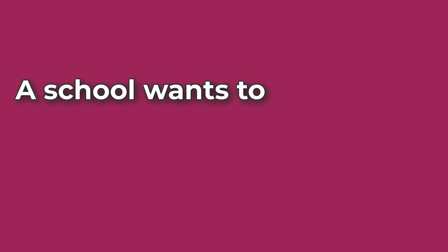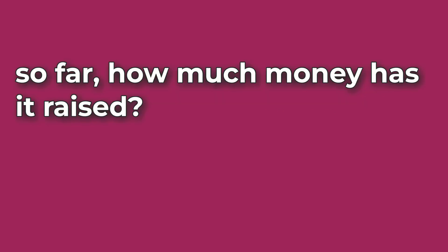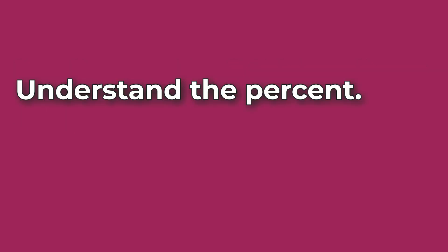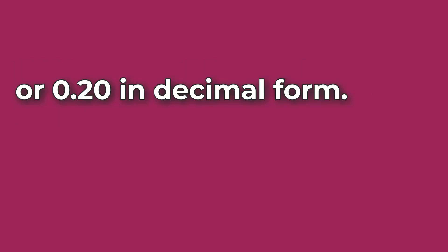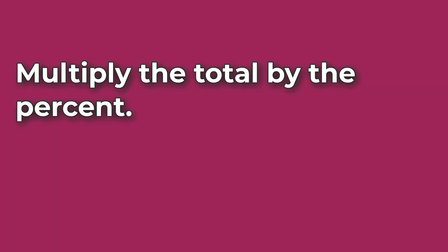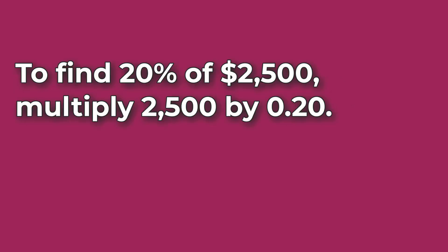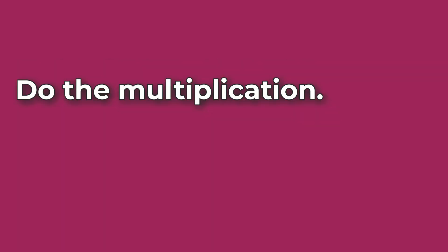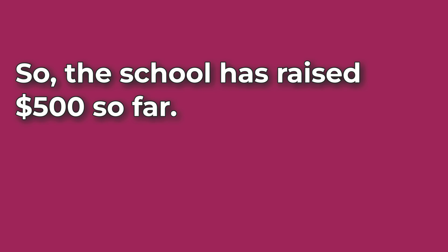Problem Number 5A. A school wants to raise $2,500 to support its music program. If it has met 20% of its goal so far, how much money has it raised? 20% means 20 out of every 100, or 0.20 in decimal form. Multiply the total goal of $2,500 by 0.20: 2,500 times 0.20 equals 500. So the school has raised $500 so far.